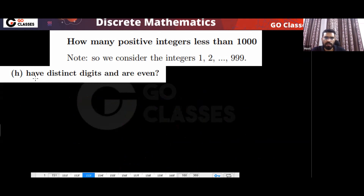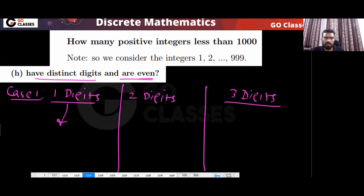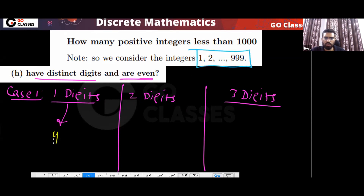Next: how many have distinct digits AND are even? Again, use cases. For one-digit even numbers from 1 to 9: only 2, 4, 6, 8 qualify, so there are 4. For two-digit numbers, you must create a sub-case: when the last digit is 0 (then 9 choices for the first digit) and when the last digit is non-zero even (4 choices for last digit, 8 choices for first digit).